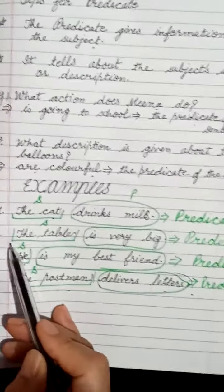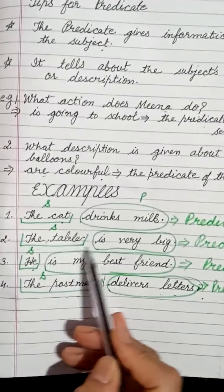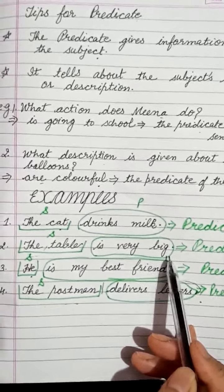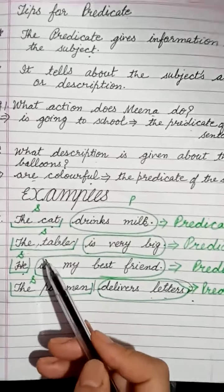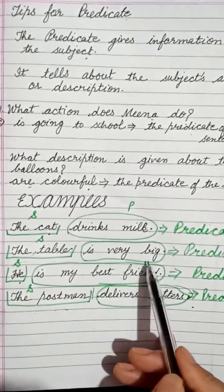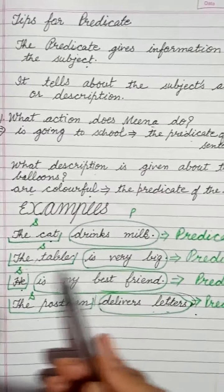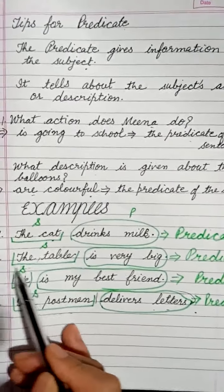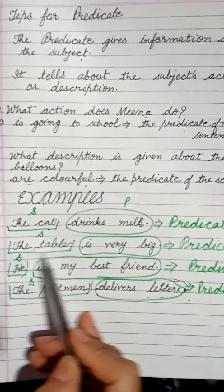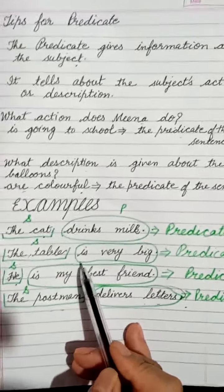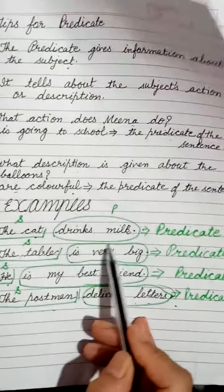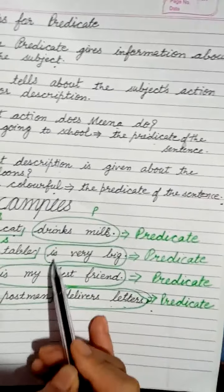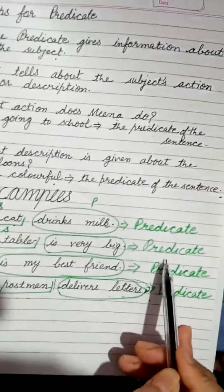In the second sentence: 'The table is very big.' If we ask what is very big, the answer is the table — so the table is the subject. And the description of the table is that it is very big, so 'is very big' is the predicate.